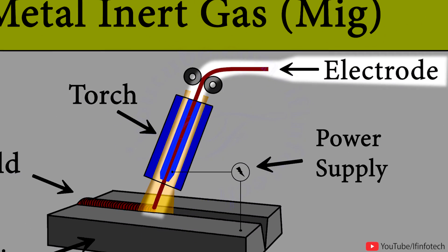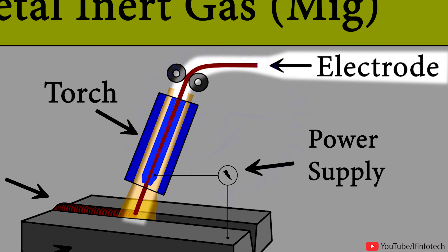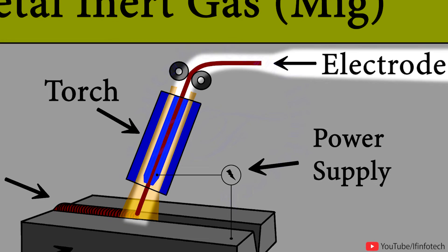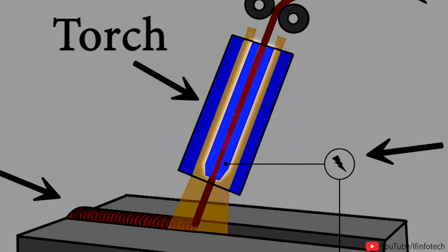The wire serves as both heat source and filler metal for the welding joint. The wire is fed through a copper contact tube which conducts welding current into the wire.